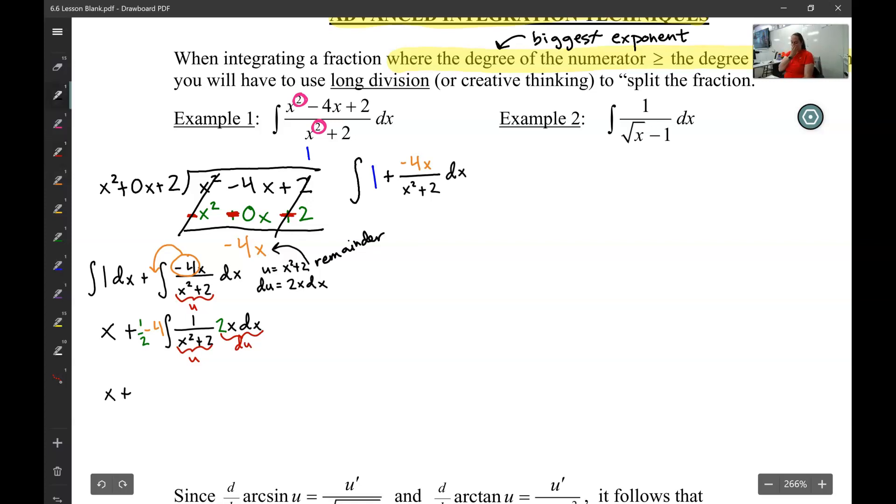x plus 1 half times 4 is a negative 2. So let's just change that. And then I have 1 over u du. Well, we already learned that 1 over u du, last lesson, that's ln of absolute value.